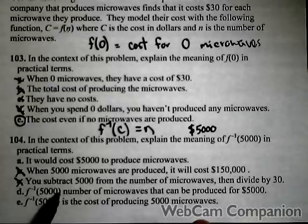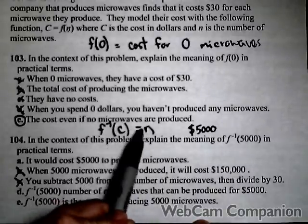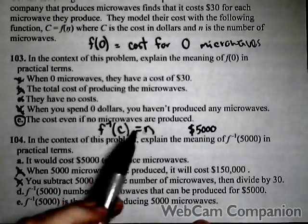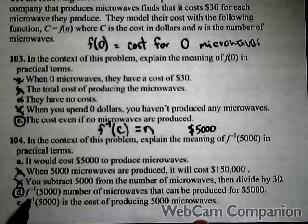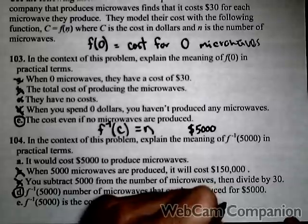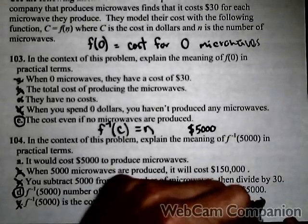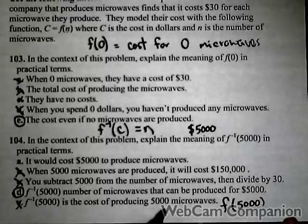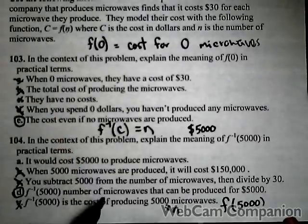f^(-1)(5000) is the number of microwaves that can be produced for $5,000. That's how the inverse works - it takes in cost in dollars and gives out number of microwaves. Notice option E is backwards: 'f^(-1)(5000) is the cost of producing 5000 microwaves' - no, this would actually be f(5000), because if we were using number of microwaves as input that's n, so we would use the original function.